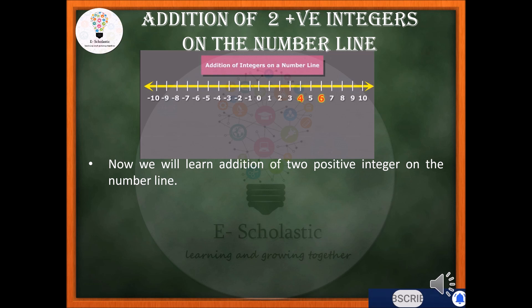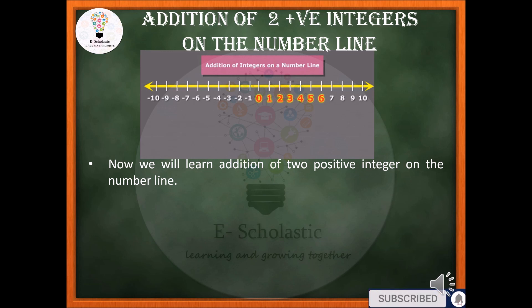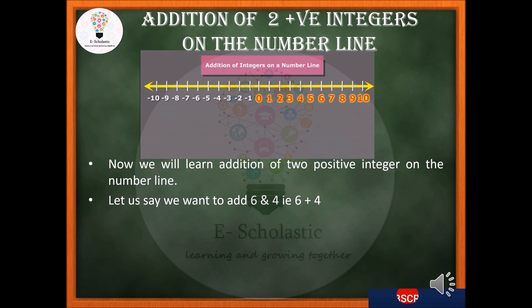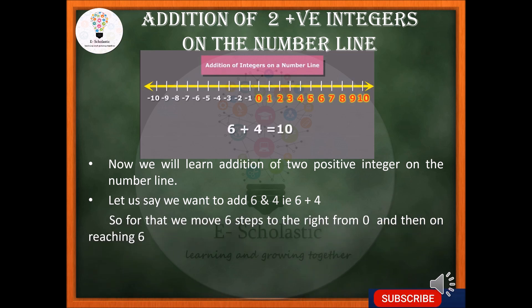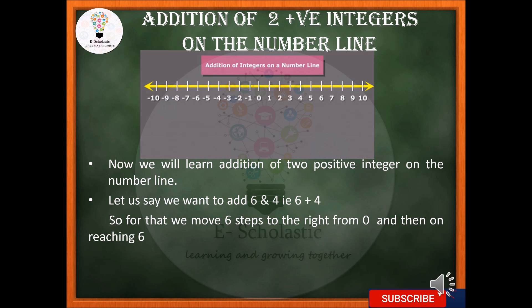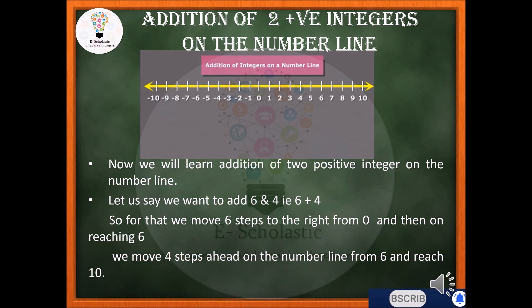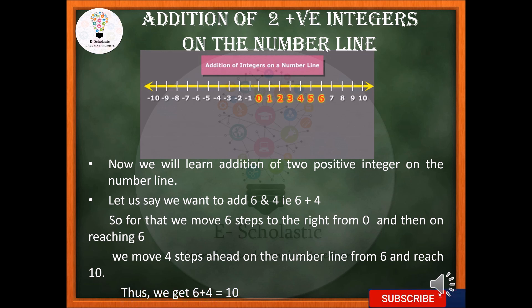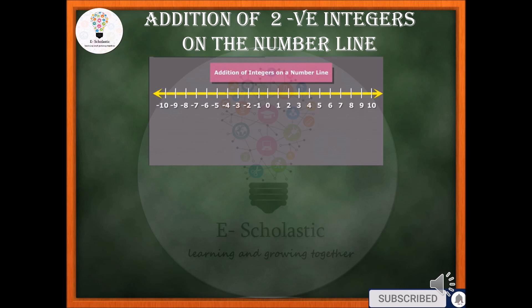Now let us see how we add two positive integers on a number line. To add 6 plus 4: we move 6 steps to the right from zero, then on reaching 6 we move 4 more steps ahead on the number line, and thus reach 10. So 6 plus 4 equals 10.